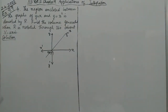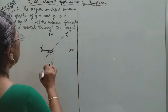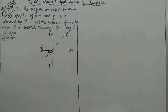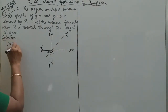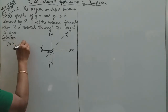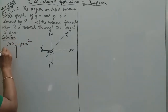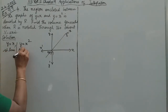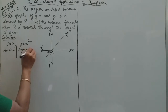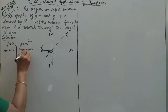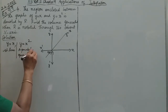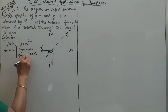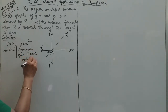The second curve is y equals x-squared, which is a parabola. y equals x-squared is a parabola opening upwards with vertex at the origin.